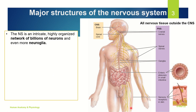What is the major structure, or what does the nervous system look like? This is a human body. In an average adult male, the central nervous system is classified into the brain and the spinal cord, and the peripheral nervous system comprises of all the nervous tissue that lies outside of the CNS.